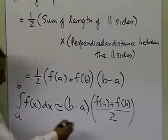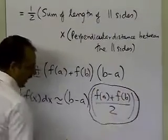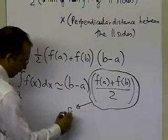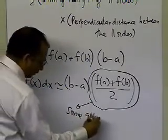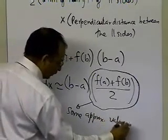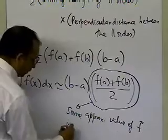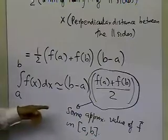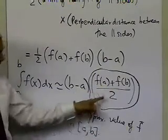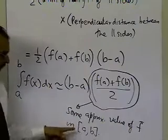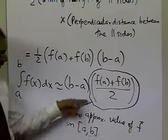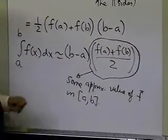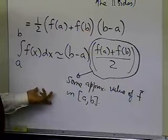You can also look at it this way: this particular term is actually some average value of the function — not the exact average value, but some approximate value of f-bar in [a, b], because you're only taking two points, the one at a and the one at b, dividing by two, and getting an approximate average value of the function on [a, b]. You would need to take an infinite number of points to get the exact average value from a to b, and that would give you the exact value of the integral.